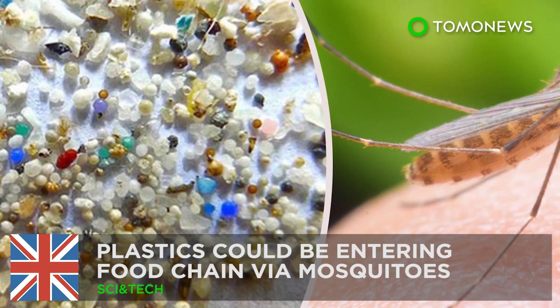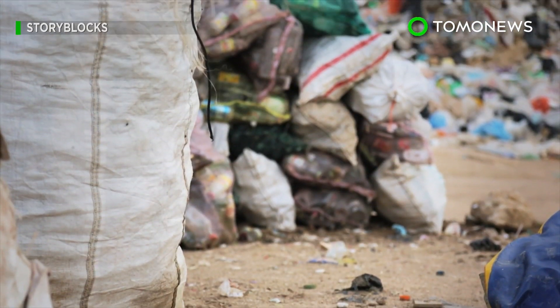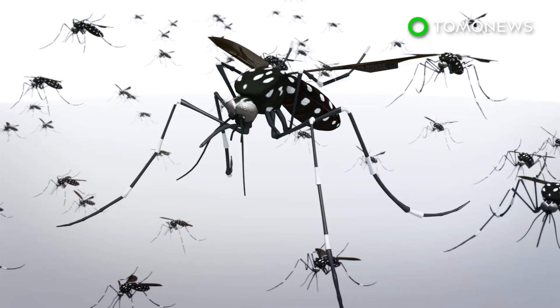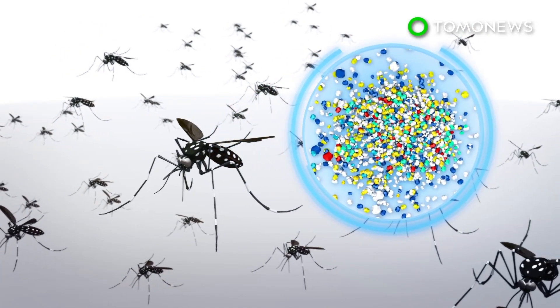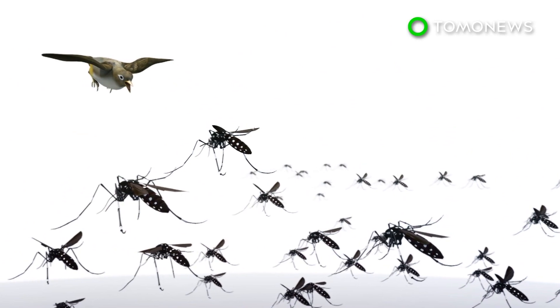Plastics could be entering the food chain via mosquitoes. At this point, people should just be eating straight plastic and cut out all the middlemen. According to new research, microplastics could be entering the food chain through mosquitoes, threatening birds and other creatures that consume the flying insects.